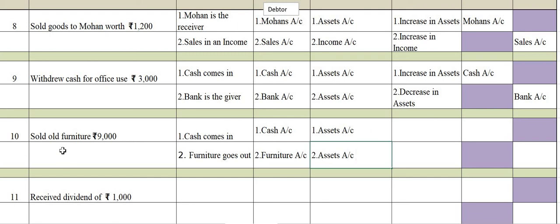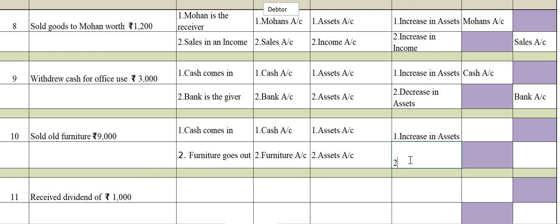You have sold old furniture for cash — cash comes in so there is increase in assets. Furniture goes out so there is decrease in assets. When there is increase in assets, we debit. So cash account is debited and furniture account is credited.